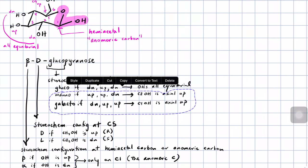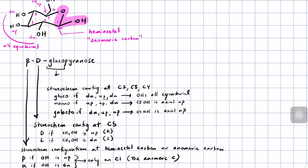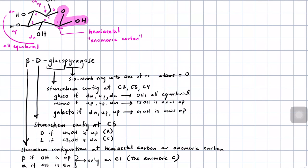Glucose, mannose, and galactose are honestly the ones you're going to see the most. So we've gotten a bit more detail about the name. Pyranose refers to a six-membered ring with one of the atoms being oxygen — specifically, one of the atoms actually in the ring is oxygen. And then the '-ose' ending tells you that the molecule is a carbohydrate, or is derived from a carbohydrate.